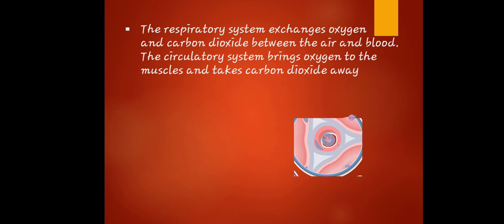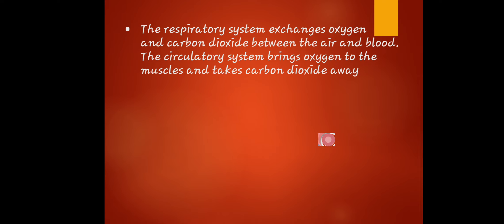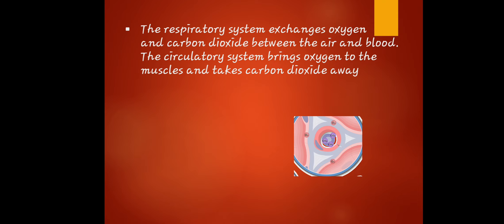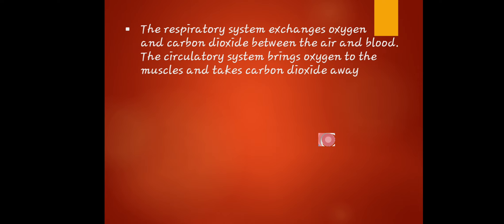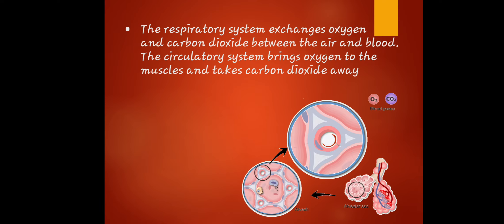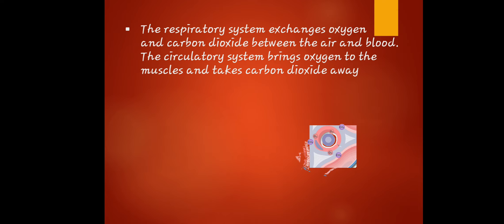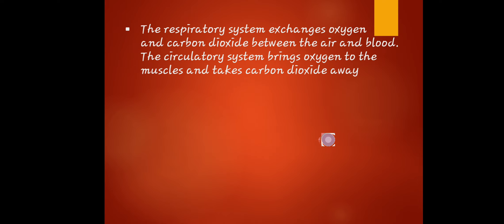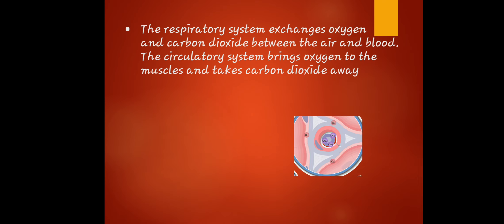The respiratory system focuses on the exchange of oxygen and carbon dioxide between the air and the blood. This leads to the circulatory system, which brings oxygen to the muscles and takes carbon dioxide away. That is the connection between the muscles and both systems.